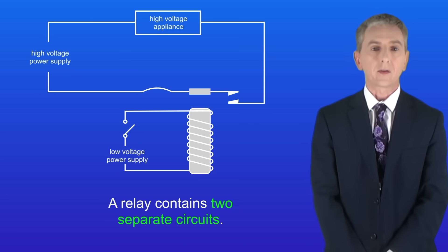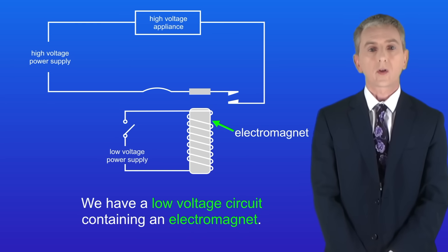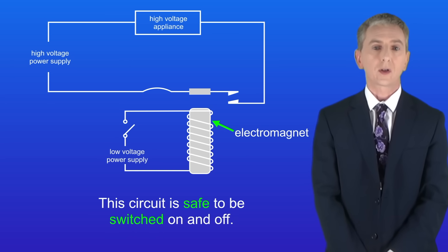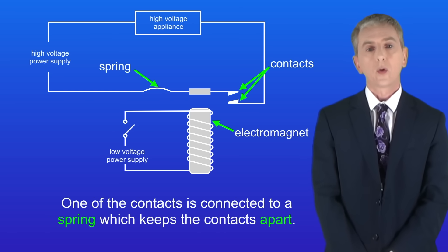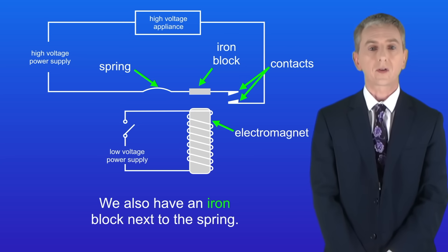A relay contains two separate circuits. We've got a low voltage circuit containing an electromagnet. This circuit is safe to be switched on and off. On the high voltage circuit, we've now replaced the switch with two metal contacts. One of the contacts is connected to a spring which keeps the contacts apart. We've also got an iron block next to the spring.